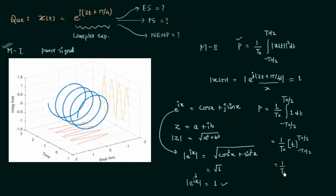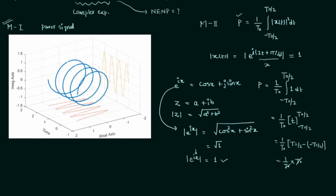Substituting the limits, we get (1/T₀) × [T₀/2 − (−T₀/2)] = (1/T₀) × T₀. T₀ and T₀ cancel out, so the average power P equals 1. Since the average power is finite, this implies the signal is a power signal, and the total energy is infinite. So signal x(t) is a power signal, confirmed by both method one and method two.